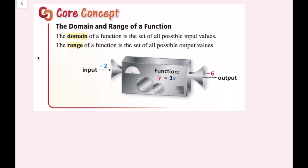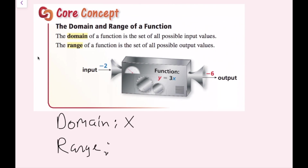The domain of a function is the set of all possible input values. The range of a function is the set of all possible output values. Typically, x is almost always the input and y is almost always the output. So whatever possible x values you have make up the domain, and whatever possible y values you have make up the range. Think of domain as x and range as y.